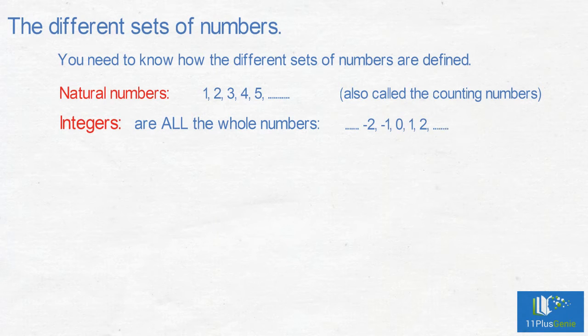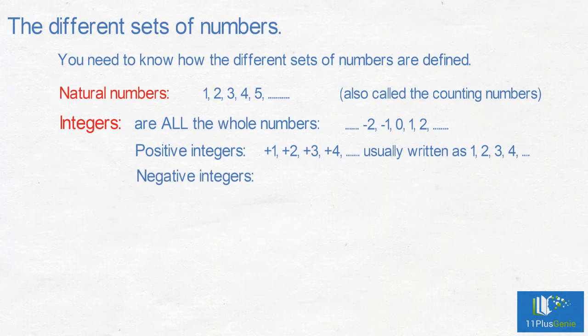Positive integers are usually written as 1, 2, 3, 4, and so on. Negative integers are minus 1, minus 2, minus 3, minus 4, etc.